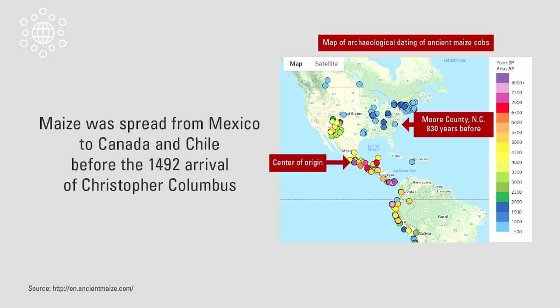This was all done by humans. Maize was recognized as a really valuable agricultural species by the ancient peoples of the Americas, and they spread it all over the Western hemisphere before Christopher Columbus arrived. By 1492, maize was already distributed from Canada all the way down to Chile.